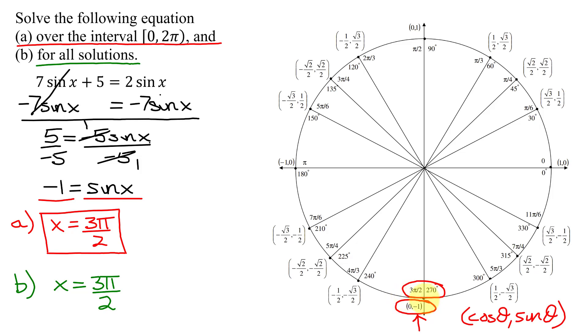How do you find coterminal angles? You add and subtract multiples of 1 revolution. Since I'm in radians, that's 2π.